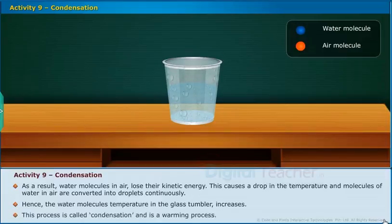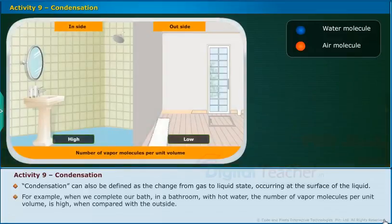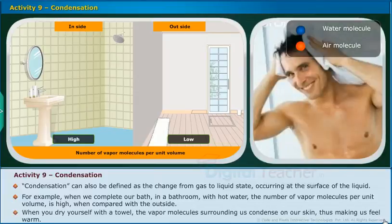This process is called condensation and is a warming process. Condensation can also be defined as the change from gas to liquid state occurring at the surface of the liquid. For example, when we complete our bath in a bathroom with hot water, the number of vapor molecules per unit volume is high compared to outside. When you dry yourself with a towel, the vapor molecules surrounding us condense on our skin, making us feel warm.